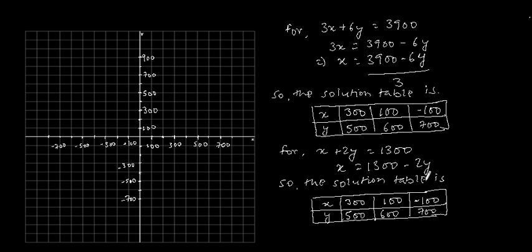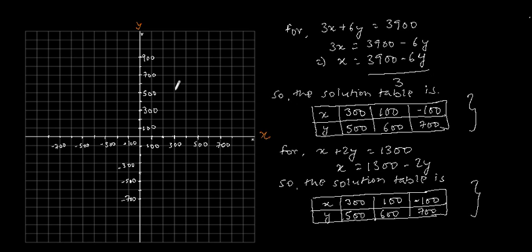Now let's plot this on the graph. Starting with the first algebraic representation 3x + 6y = 3900, using its solution table. First point: x = 300 and y = 500. This is the x-axis. So x = 300, y = 500 — this is our required point (300, 500).